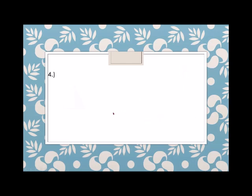Another example: we have a triangle. How many shaded parts? 1. So the numerator is 1. And divided into how many parts? 1 and 2. So the denominator is 2.